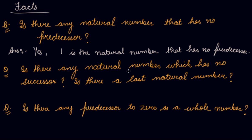Is there a last natural number? The natural number starts from 1. Successor of 1 is 2, then 2's successor is 3. So, the natural numbers are infinite. Therefore, there is no natural number which does not have any successor.